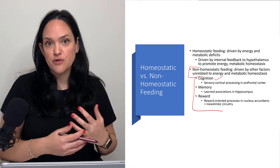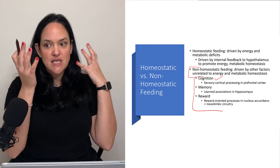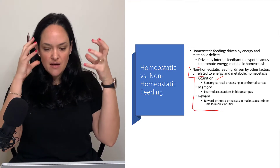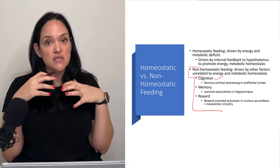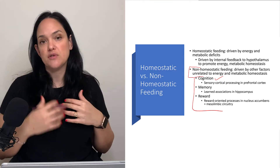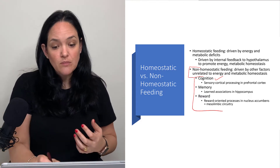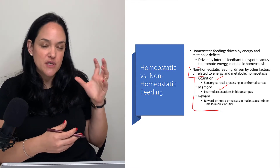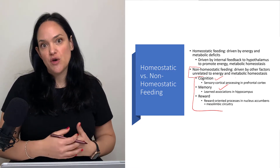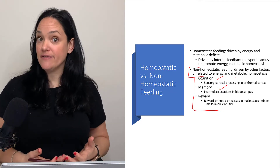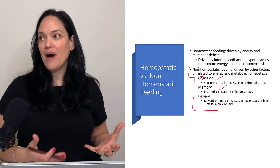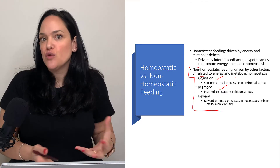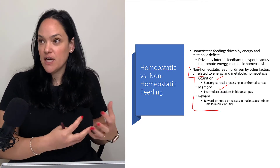We'll start with the prefrontal cortex and its ability to sense what we see in our environment — what we smell, what we think of food — and integrate that with our thinking, judgment, and evaluation processes to decide on whether to eat or not. Cognition is highly integrated with memory too, but our memory centers, particularly located in the hippocampus, can also affect food intake by reminding us of what we really enjoy eating, certain times of day to eat, and how much food is appropriate given past experiences.